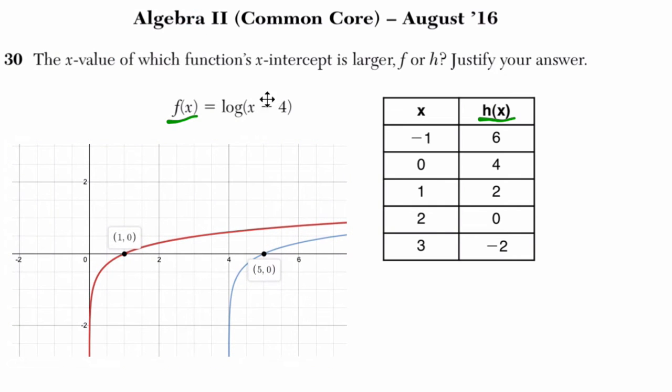For all functions, if you subtract from the input, if you subtract a positive amount from the input, you're going to move to the right. If you add, you might guess, you go to the left. So if this is x plus four, this x-intercept would move to the left four, over here to negative three. We're moving to the right.